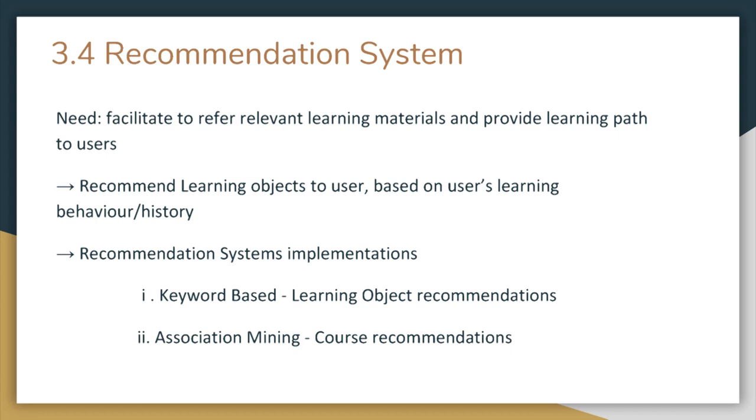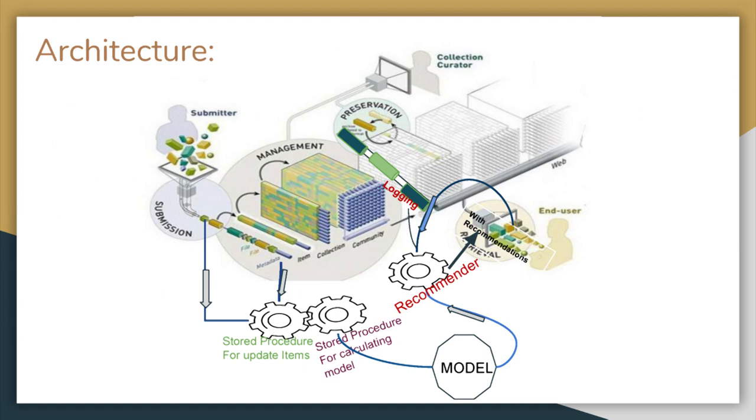Recommendation system in this OER can be done at two levels. One is at learning object level and another is at course level. To implement the recommendations at learning object level, we are using keyword based recommendation approach. To recommend the courses, we are using association mining, a part of data mining. This is the architecture after we have added the recommendation system to the already previously existing DSpace.